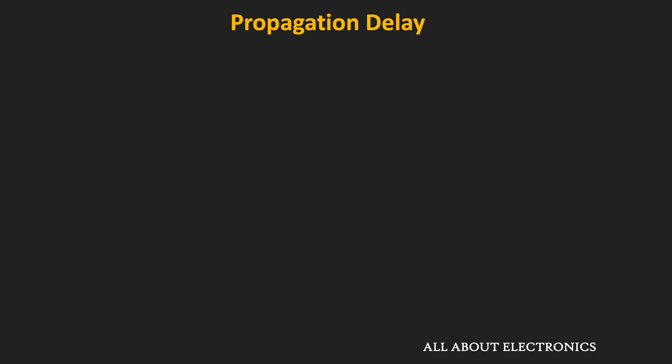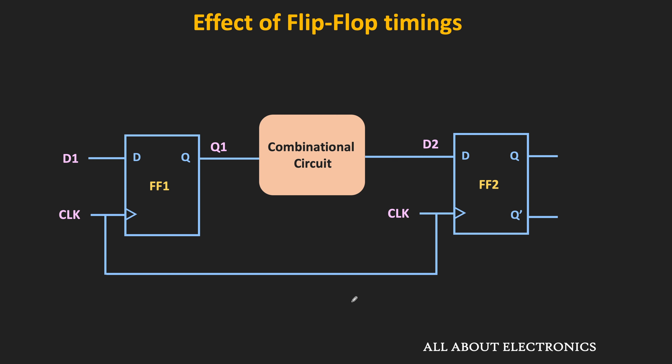So far we have seen the three timings of the flip-flop: setup time, hold time, and propagation delay. Whenever we are designing any sequential circuit using flip-flops, like counters or registers, these flip-flop timings are very important — for example, these timings can decide the maximum operating frequency of the particular circuit. Here, a D flip-flop based simple sequential circuit is taken as an example where both flip-flops receive the same clock, the output of the first flip-flop is given to a combinational circuit, and the output of that combinational circuit is given to the second flip-flop.